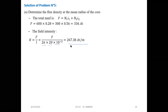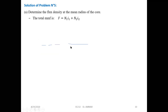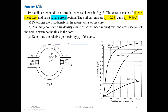Since we have the magnetizing curve, the easiest way is to find H, then use the magnetizing curve to determine B. From the value of H, we can determine B. The material here is silicon sheet steel. So for H = 267, using the magnetizing curve, B is approximately 1.40 T. This is the easiest way to find B from the curve using the value of H, which itself comes from the total MMF.